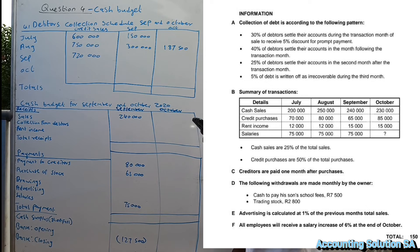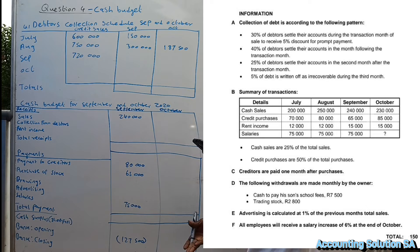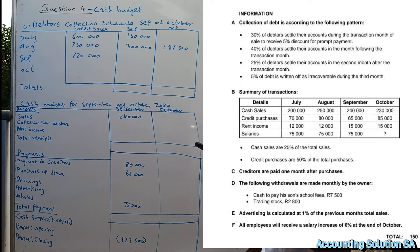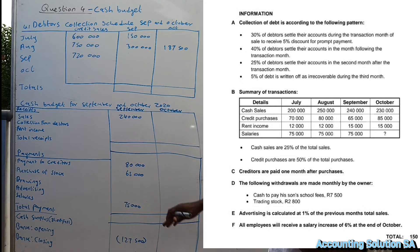Let's read information number one. Collection of debtors is according to the following pattern: 30 percent settle their account during the transaction month of sales and receive a 5 percent discount for prompt payment — in other words, they pay in the same month. 40 percent pay the following month, 25 percent the month after. Cash sales are 25 percent of total sales, which means 75 percent are credit sales. Credit purchases are 50 percent of total sales, which means the other 50 percent are cash purchases.